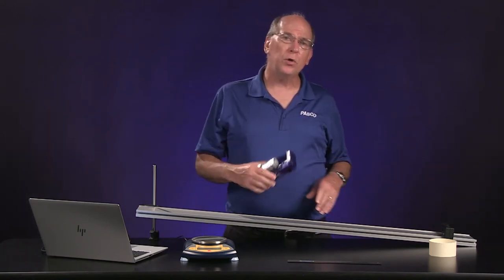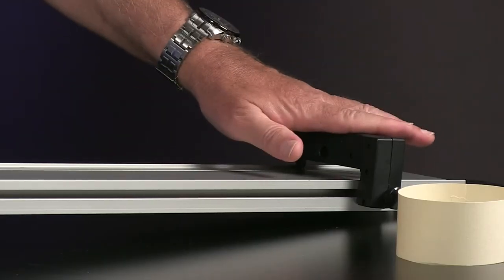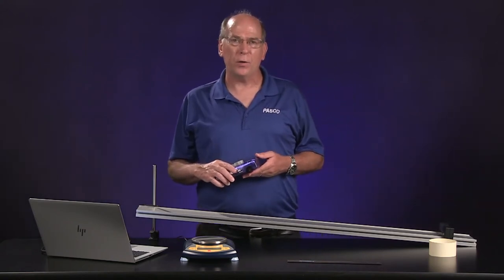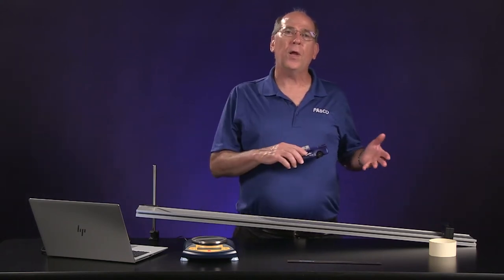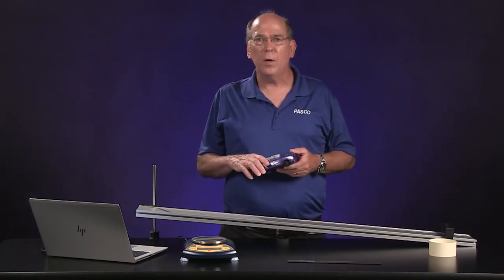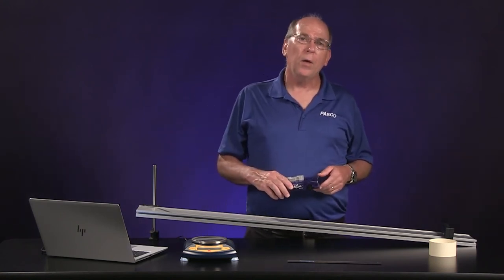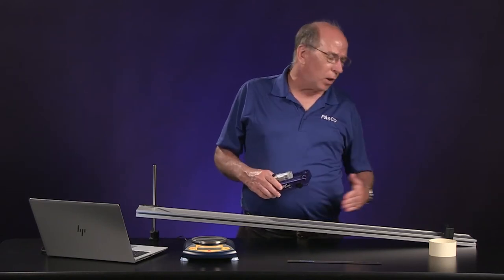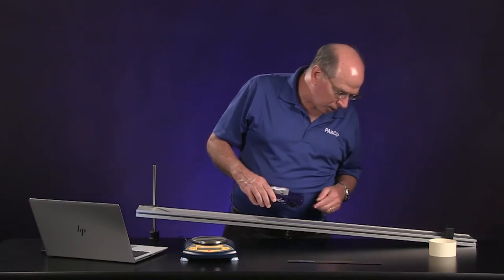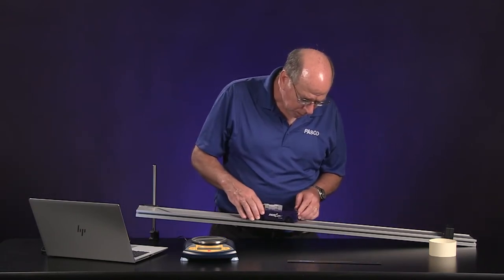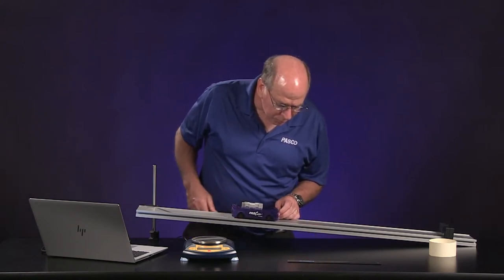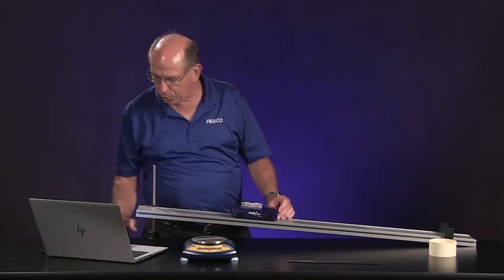First, we'll measure the acceleration of a collision between the cart and just the end stop. This simulates a collision with a rigid object that doesn't have a crash cushion. We can compare this data with our crash cushion data to see how well they work at reducing the acceleration. After I start recording data, I'm going to release the cart from rest 60 centimeters from where the collision occurs here at the end stop. So that's at 110, and so if I release it from 50, then it'll have traveled 60 centimeters down.